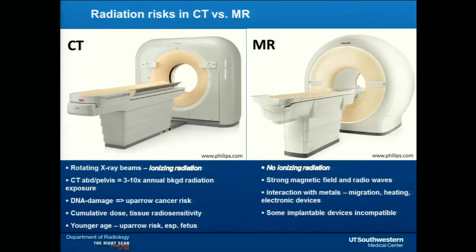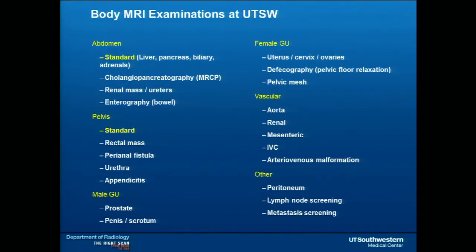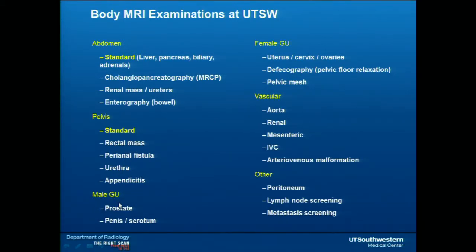MRI uses strong magnetic fields and radio waves to form images, so there is no ionizing radiation. Patients with metal implants are at risk and some devices are incompatible, but nonetheless MRI is free from potential cancer-causing risk. Our body MRI section offers comprehensive evaluation of a wide variety of anatomy and pathology in the abdomen and pelvis. In addition to standard abdomen and pelvis protocols, we also have specialized protocols targeted to answer specific questions such as local staging of rectal cancer, prostate cancer, and cervical cancers.